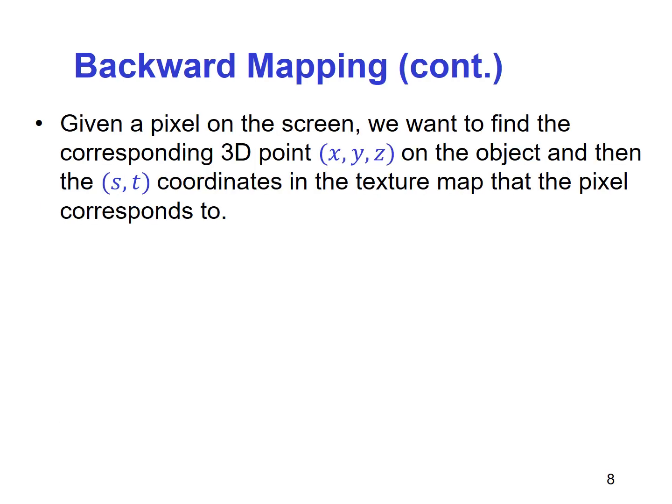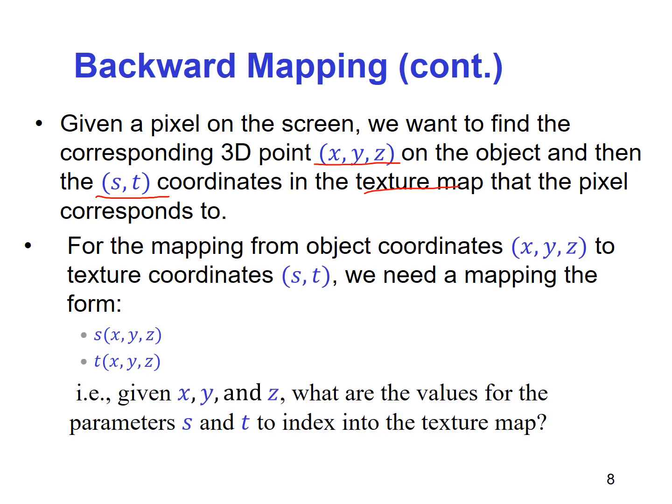Given a pixel on the screen, we want to find the corresponding 3D point (X, Y, Z) on the object, and then find the (S, T) coordinates in the texture map that the pixel corresponds to.